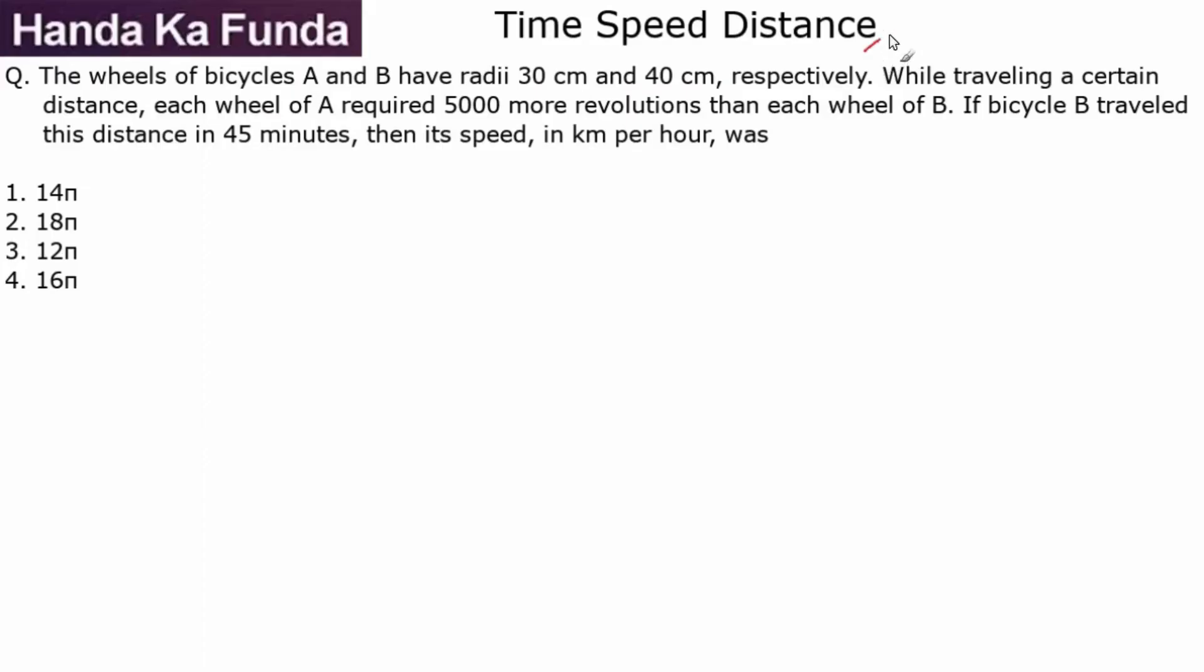Hi everyone, welcome to another question on time, speed, and distance. The wheels of bicycle A and B have radii of 30 centimeters and 40 centimeters respectively. While traveling a certain distance, each wheel of A required 5000 more revolutions than each wheel of B.